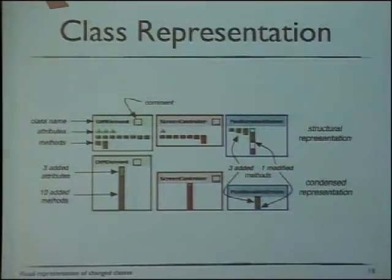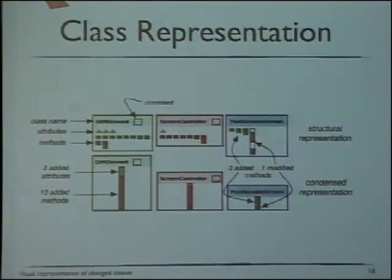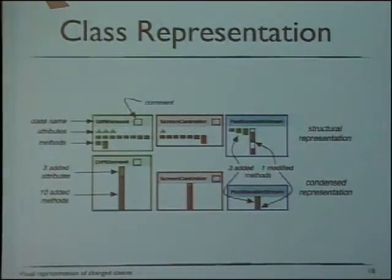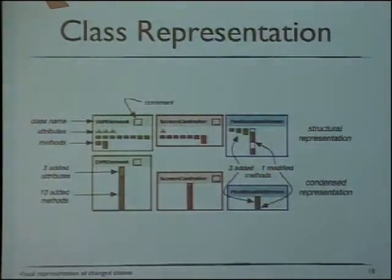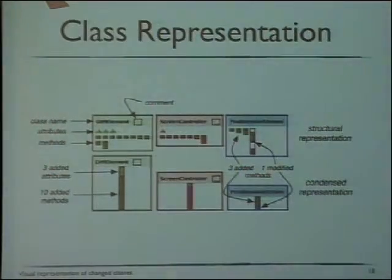Regarding structural versus condensed view: the structural view shows variables and methods, while the condensed view is basically just one bar using the same colors — a bar with sections where each section represents a type of change. For example, here you have three attributes added, and the length of the bar represents those three attributes. For modifications in the condensed view, I just count methods and present a blue section, since I can't show individual line-level stripes there.